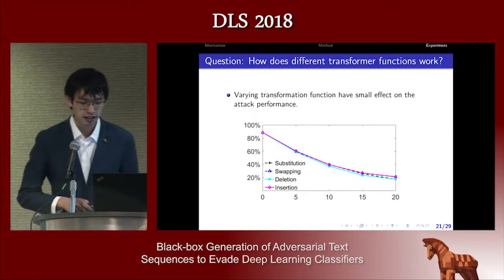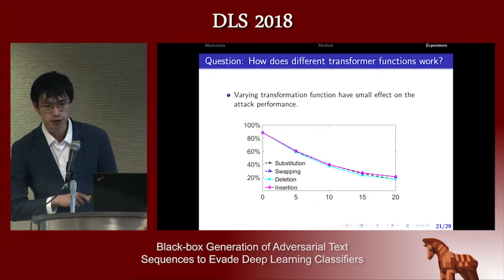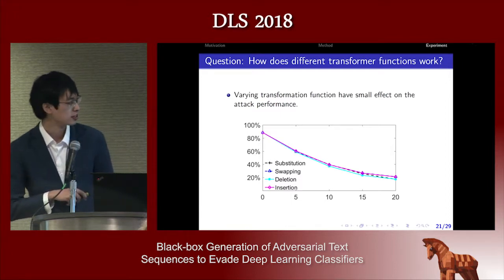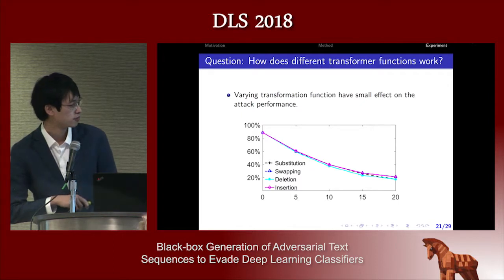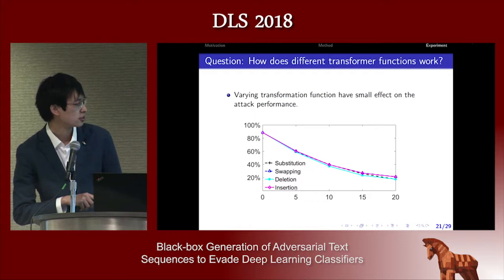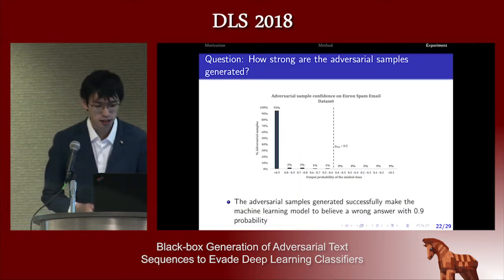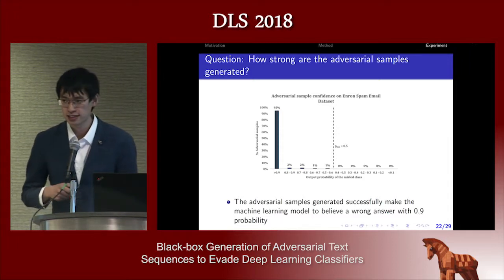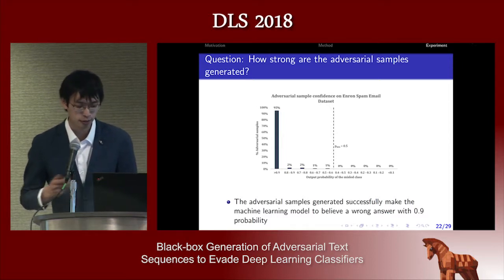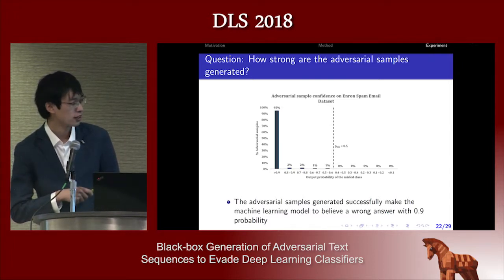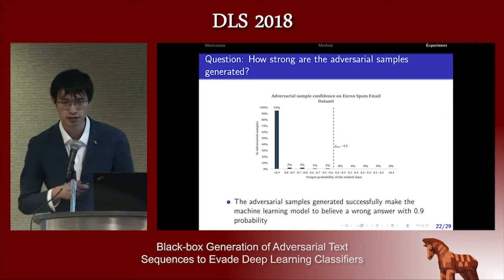We also studied whether different transformation functions affect attacking performance — there is generally very slight difference between methods. The y-axis is accuracy and the x-axis is number of words modified. When you modify around 10 to 20 words, accuracy reduces a lot. We also studied whether our adversarial samples are strong — this result shows our adversarial samples have very high probability of making the machine learning model believe the wrong answer.